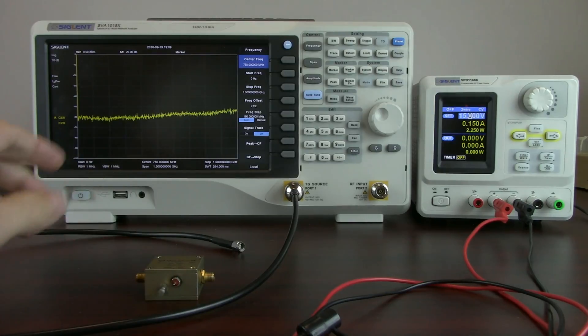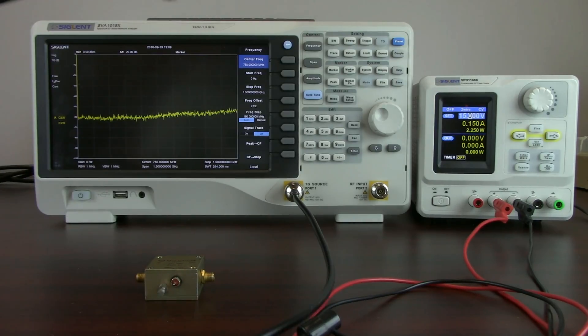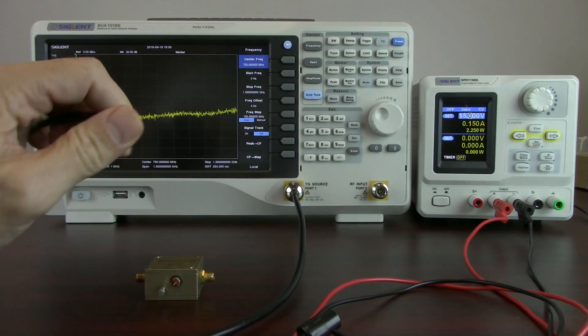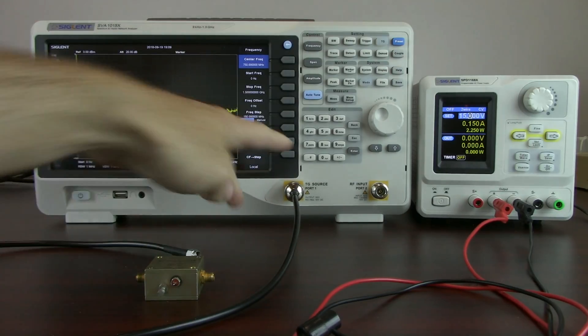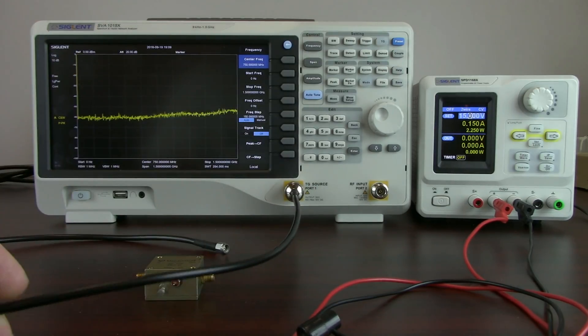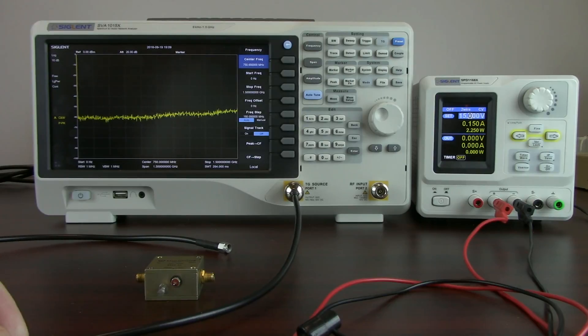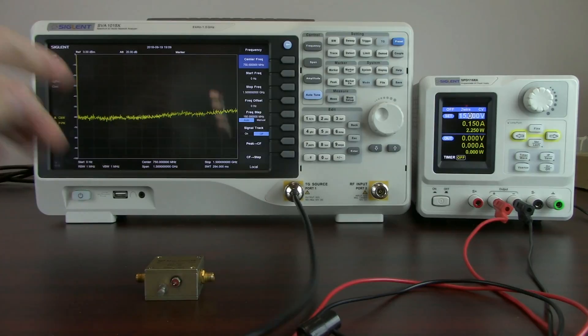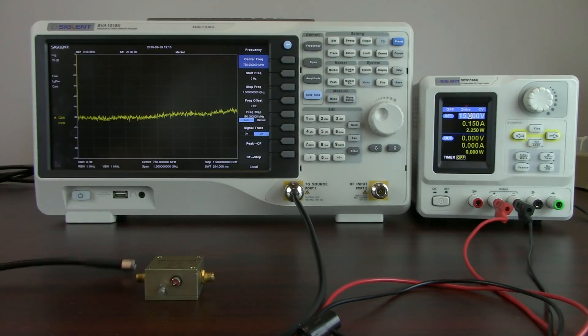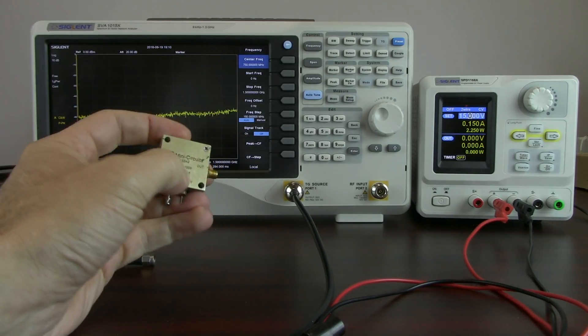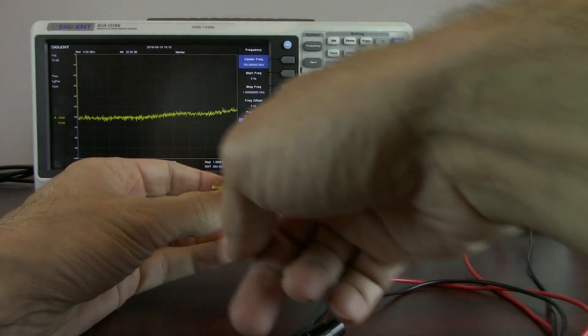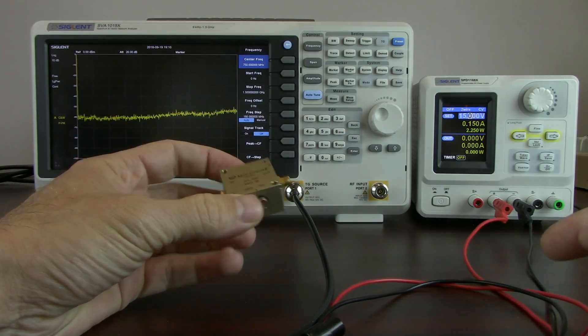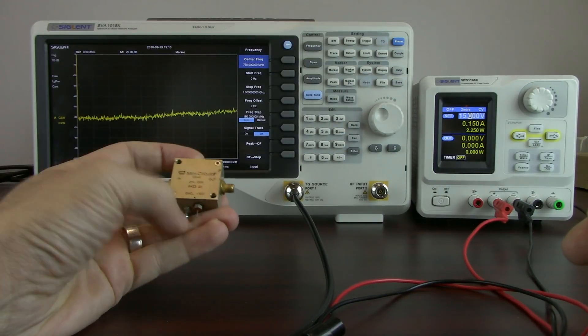So the first thing that we're going to do is we have an SMA to N type connector here on the tracking generator source output. The tracking generator source is going to source a particular frequency or range of frequencies. Those are going to go into the device under test and then we're going to get a certain amount of reflected energy based on the impedance match.